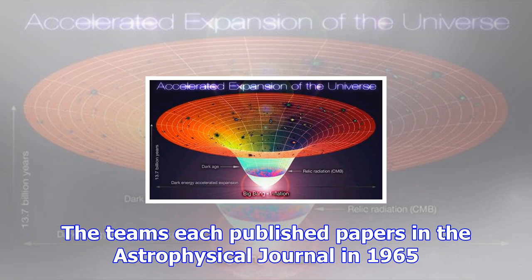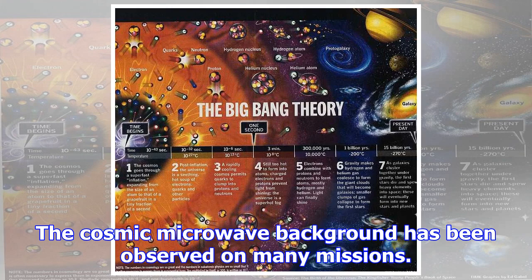Simultaneously, a Princeton University team led by Robert Dicke was trying to find evidence of the CMB, and realized that Penzias and Wilson had stumbled upon it. The teams each published papers in the Astrophysical Journal in 1965.